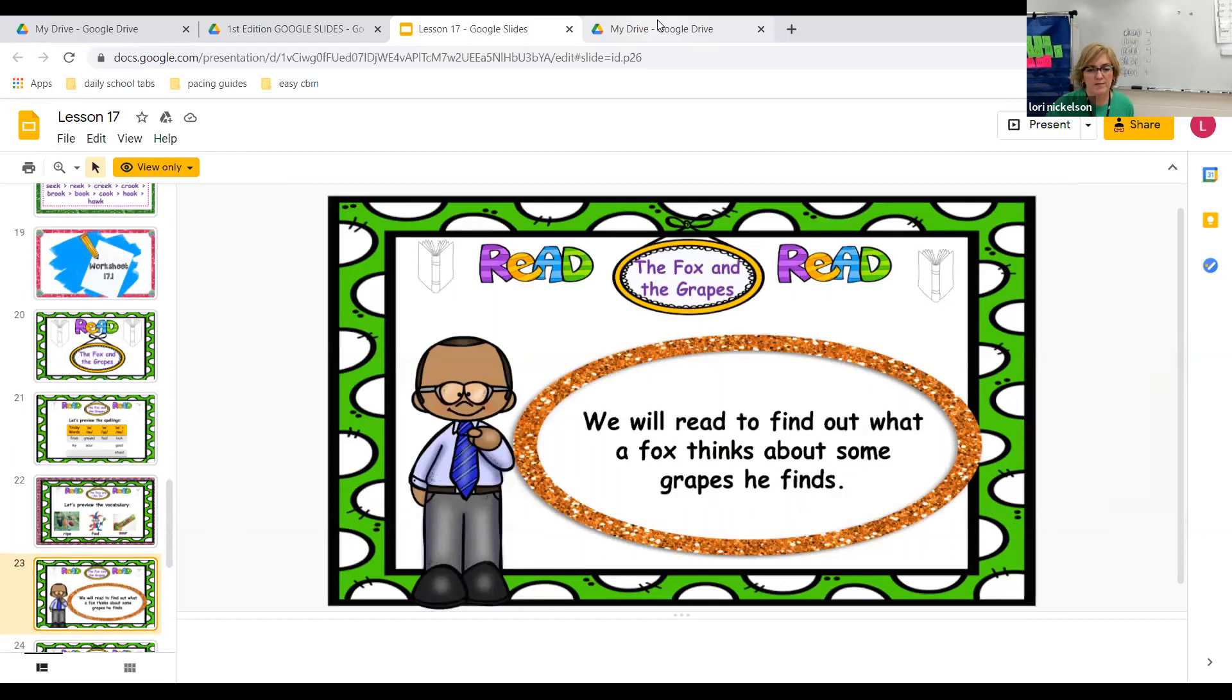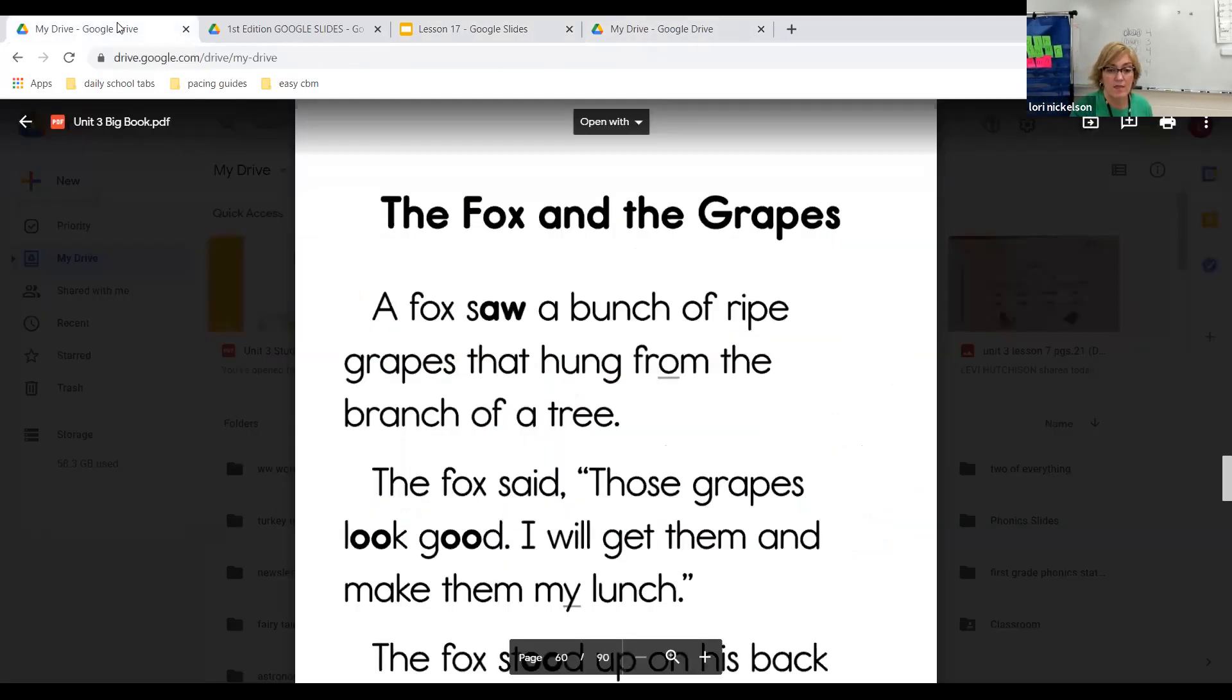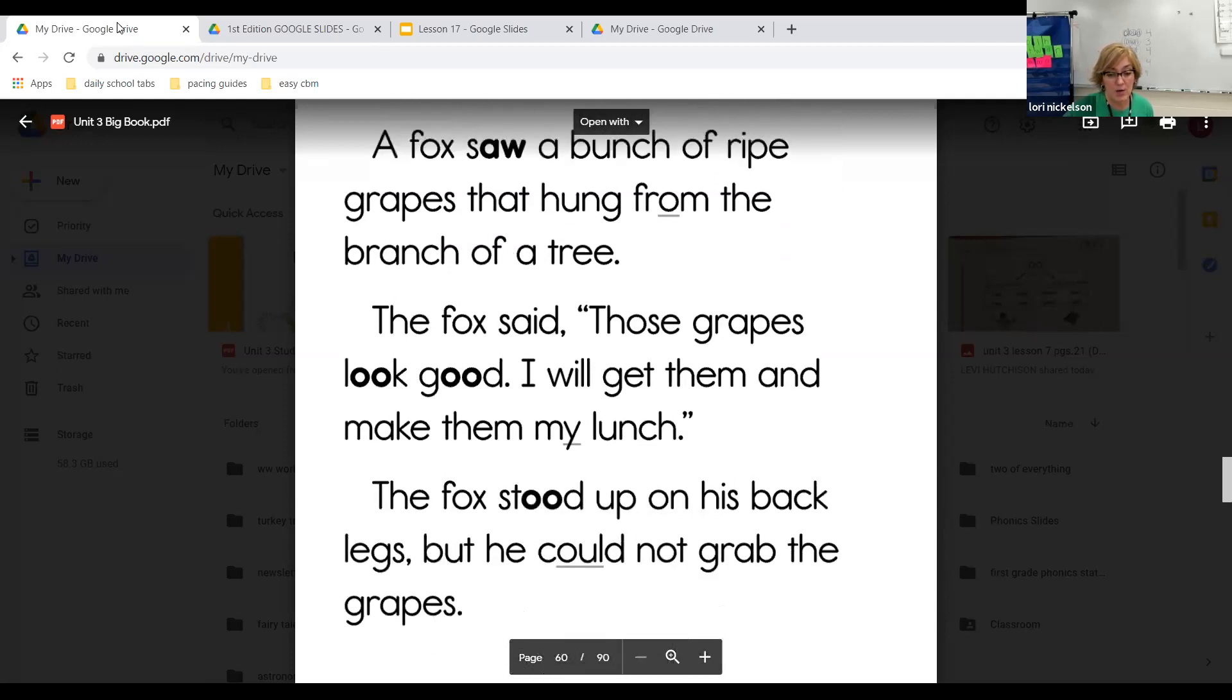So we're going to read to find out what a fox thinks about some grapes he finds. So let's go to our story over here. The fox and the grapes. A fox saw a bunch of ripe grapes that hung from the branch of a tree. The fox said those grapes look good. I will get them and make them my lunch. The fox stood up on his back legs, but he could not grab the grapes.